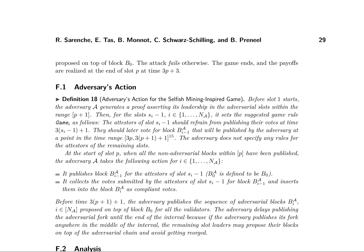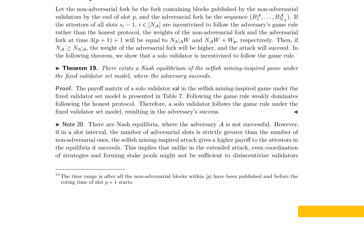The authors propose a selfish mining inspired game to analyze the security of Ethereum's reward mechanism. In this game, an adversary generates a proof of leadership in adversarial slots within a specific range and sets a suggested game rule for attestors in each slot. The adversary publishes a sequence of adversarial blocks, and if the attestors follow the game rule, the weights of the non-adversarial fork and the adversarial fork will be equal, leading to the attack's success. The authors prove that a solo validator is incentivized to follow the game rule, resulting in the adversary's success. This implies that even coordination of strategies and forming stake pools might not be sufficient to disincentivize validators from following the game rule. The payoff matrix of a solo validator in the selfish mining inspired game under the fixed validator set model is presented, showing that following the game rule weakly dominates following the honest protocol. The authors note that there exist Nash equilibria where the adversary is not successful, but the selfish mining inspired attack gives a higher payoff to the attestors and the equilibria it succeeds.